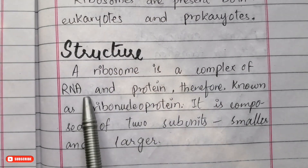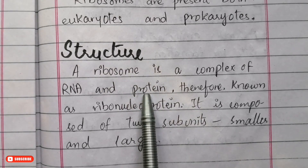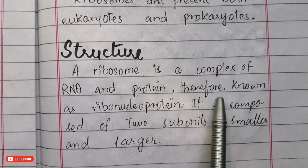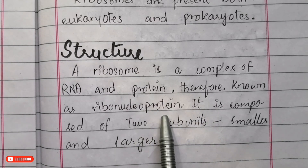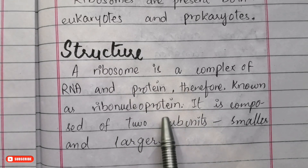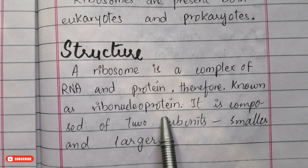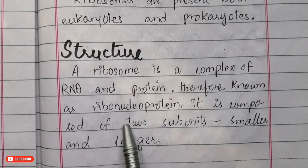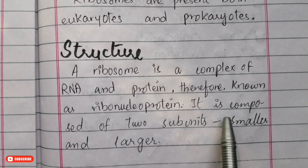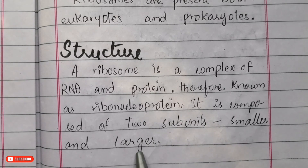In terms of structure, a ribosome is a complex of RNA and protein. Because they are composed of RNA and protein, ribosomes are therefore known as ribonucleoproteins.